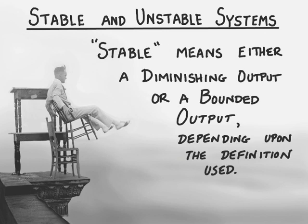As we'll discuss in more detail in just a minute, stable means either a diminishing output or a bounded output, depending upon the definition that is being used. There actually are many definitions of stability. In this class, we'll consider two — one with respect to the input, and one with respect to the initial conditions.